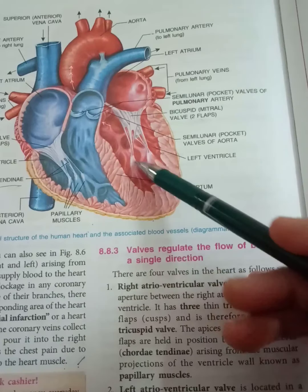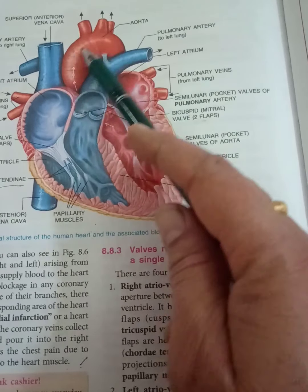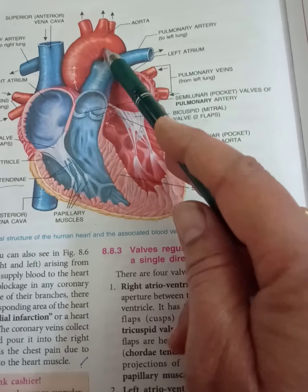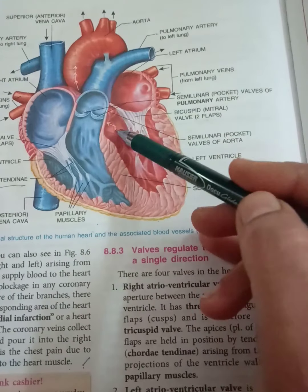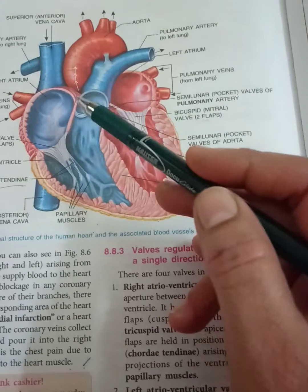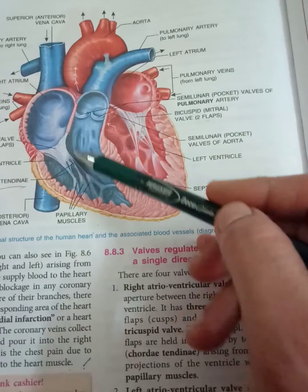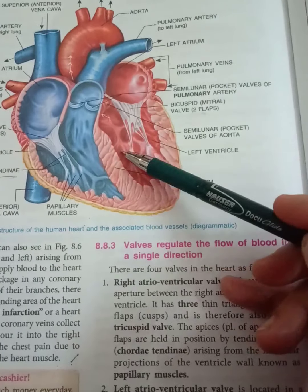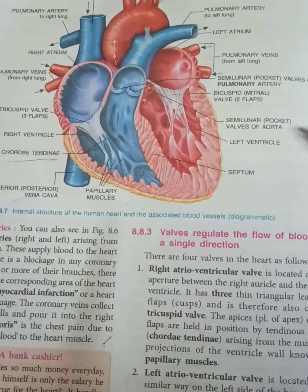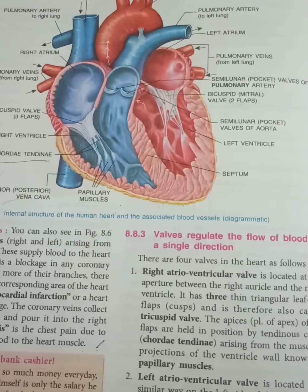After blood reaches the left ventricle through the bicuspid valve, it is forced toward the aorta during ventricular contraction to supply the body parts. There are pocket valves or semilunar valves at the base of the aorta, as well as at the base of the pulmonary artery. These allow blood to flow in one direction only — they fill and close to prevent backflow after ventricular contraction. These two figures are very important to learn carefully. This is a revision video, though I have also discussed this in class.